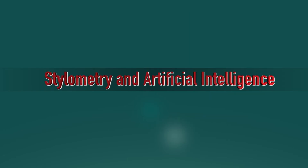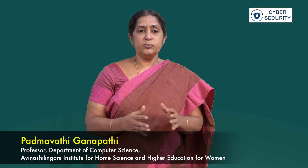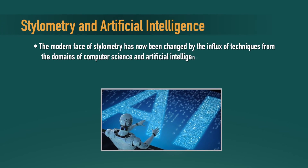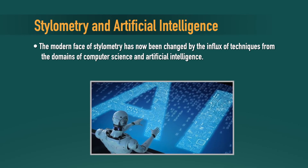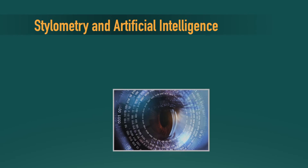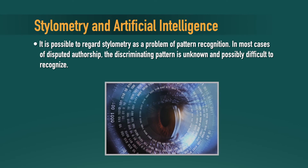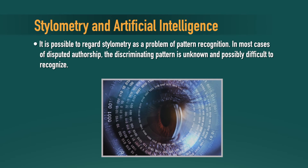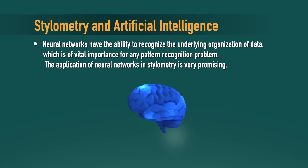Now we will move on to stylometry and artificial intelligence. Today, artificial intelligence is the talk of the town — it is applied in almost all activities including day-to-day products and processes. The modern phase of stylometry has been transformed by the influx of techniques from various domains of computer science, especially artificial intelligence. It is possible to regard stylometry as a problem of pattern recognition. In most disputed authorship cases, the discriminating pattern is unknown and possibly difficult to recognize. Neural networks have the ability to recognize the underlying organization of data, which is of vital importance for any pattern recognition problem.